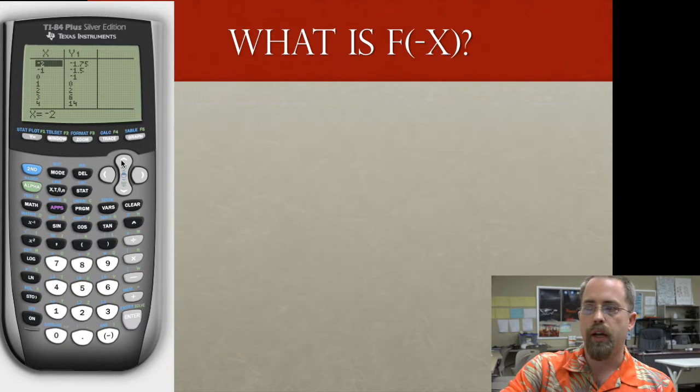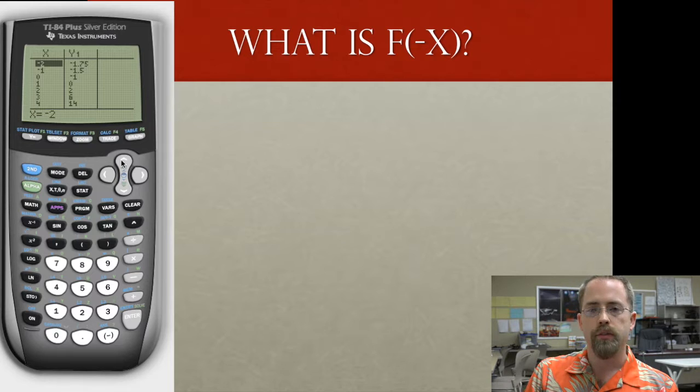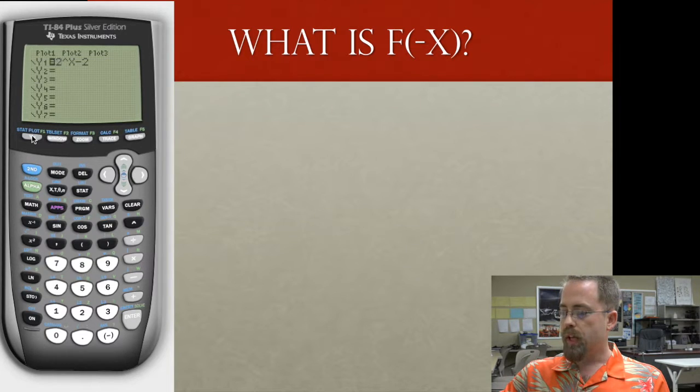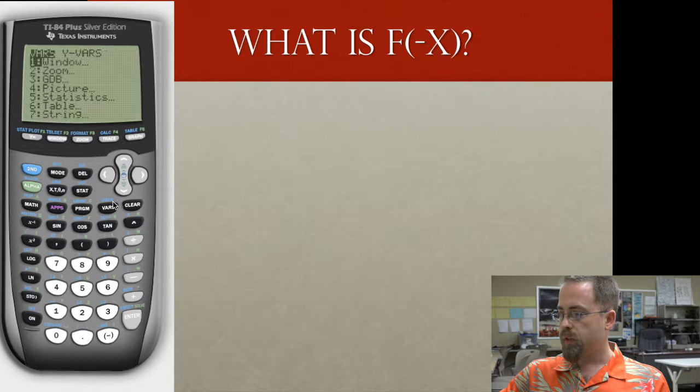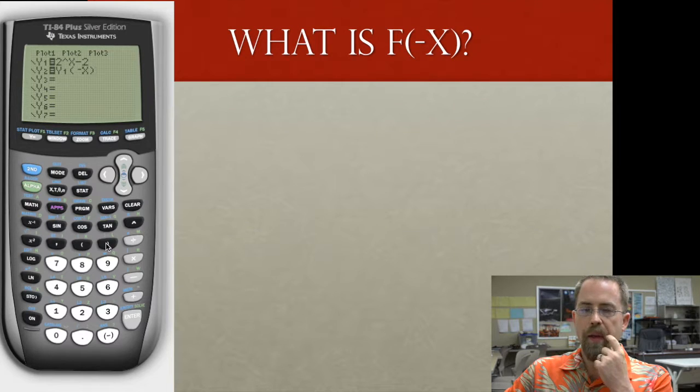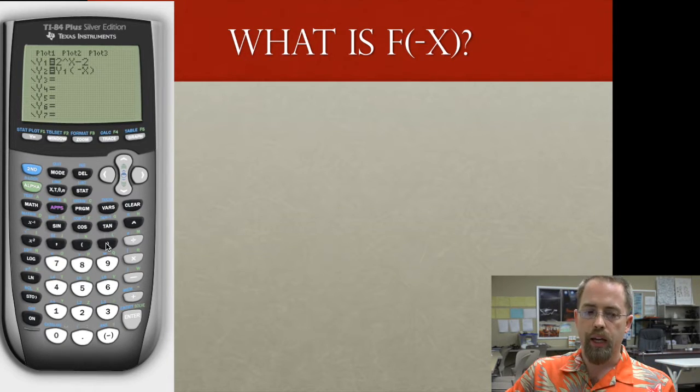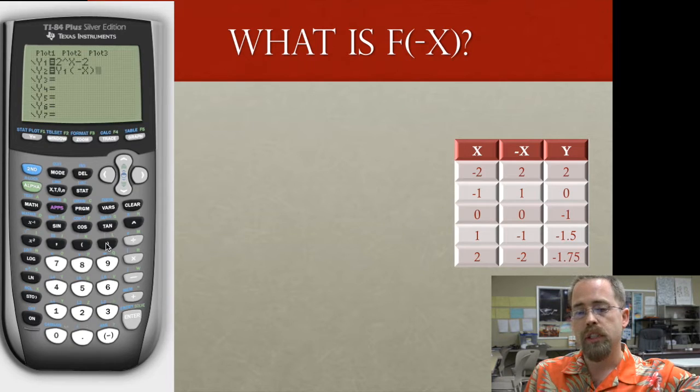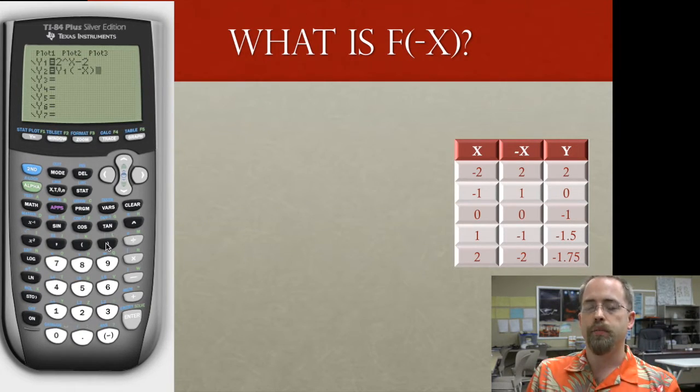Let's fiddle with it. So the first fiddling that I'd like to try is to say, what happens if we say f of negative x? This is something that you can practice looking at in your calculator by going to the y equals and saying, in y2, we're going to have vars, move over to y vars, function y1 of negative x. What's this going to do? Let's think about this here. When I plug in a particular x value, whatever I've picked, it's going to flip to the opposite sign.